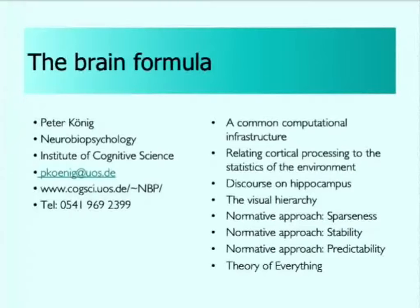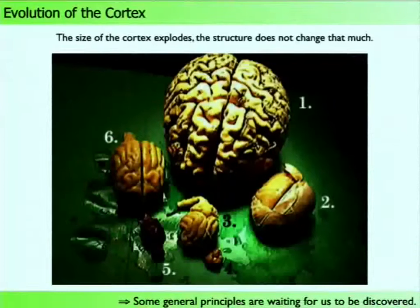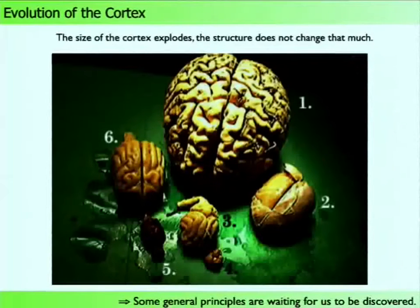We will make a short discourse on the hippocampus, which we need for understanding the visual hierarchy and the normative approach applied to hierarchical networks — covering the second half of the lecture. Let's start with a look at the brain. On this slide you see a number of mammalian brains; the big one in the center is a human brain, along with brains of two different species of monkeys, a cat, rat, and mouse.